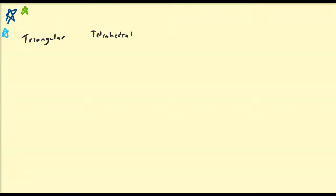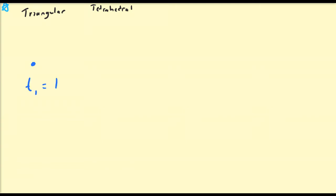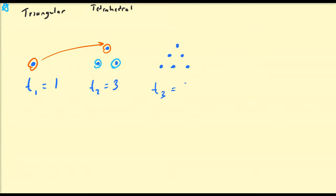Let's begin by defining geometrically what the triangular numbers represent. The first triangular number we define as t1 equal to 1. The second triangular number is formed by having two base points and then another point above it — 1 up there and 2 down here. The triangular number is the number of dots that comprise this triangle, so t2 is equal to 3.